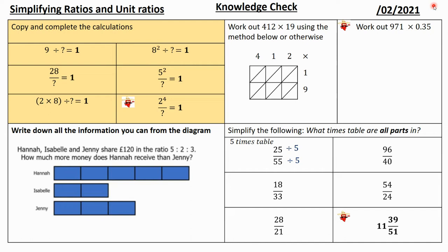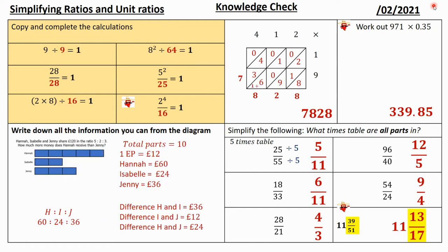If you haven't paused the video yet, answers are coming up - green pens at the ready in three, two, one. Green pens to tick or fix. For all of these you had to divide by itself - remember, a fraction means divide. You had to work out the calculation and write it. If you wrote two times eight divided by two times eight, that's fine, but please write in 16. Same for all of these - if you just divided by eight squared you're not wrong, but write in 64 as well.